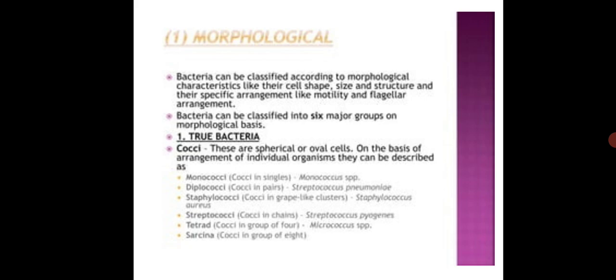Morphological: Bacteria can be classified according to morphological characteristics like the cell shape, size and structure, and the specific arrangement like motility and flagella arrangement. Bacteria can be classified into six major groups on morphological basis. First one, Cocci.